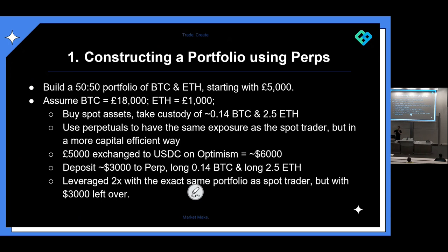For the first use case: imagine you want to build a 50/50 portfolio of Bitcoin and ETH. Starting with £5000, assuming Bitcoin at £18,000 and Ethereum at £1000, buying spot you'd get around 0.14 BTC and 2.5 ETH. But you can use perpetual contracts to have the same exposure in a more capital efficient way. If you exchange £5000 to USDC on Optimism you get around $6000. You can deposit $3000 to Perp and long 0.14 BTC and 2.5 ETH — you're leveraged 2x with the same portfolio and price exposure as the spot trader, but you have $3000 left over.